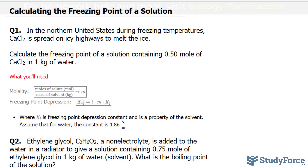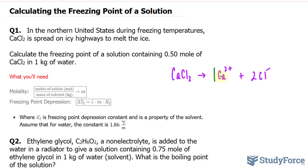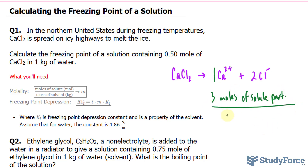The first thing I want to do is show you the dissociation equation for calcium chloride. Calcium chloride dissociates into calcium ions and two chloride ions. I want to sum up the number of moles in the products, which is 3. So there are 3 moles of solute particles for every 1 mol of calcium chloride. This number will be placed into where you see I.